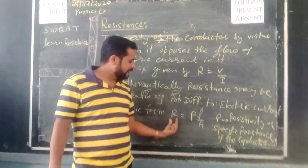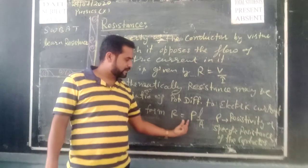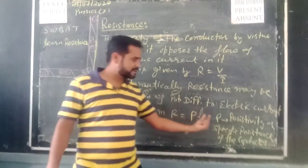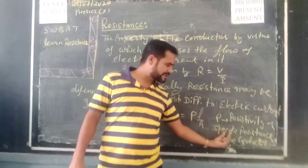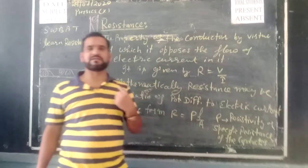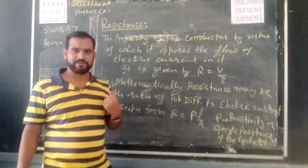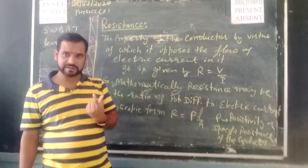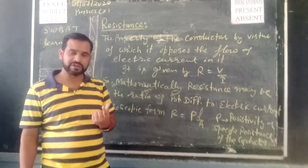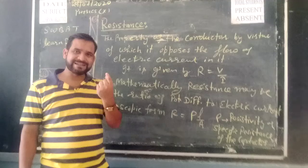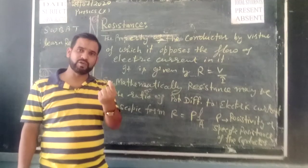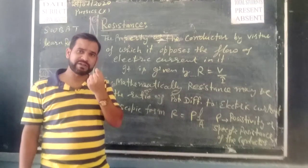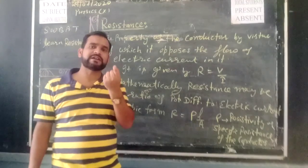What is resistivity? R is equal to resistivity — the resistivity and specific resistance of the conductor. Specific resistance is the resistance of a 1 cm cube of a particular material conductor.